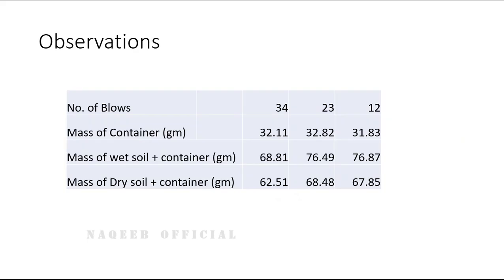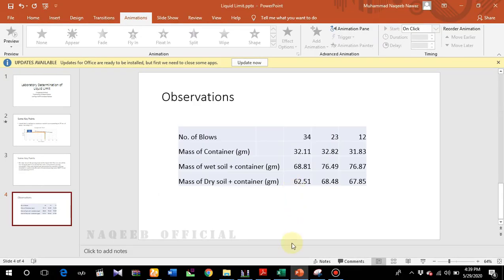Now let's understand how we determine the liquid limit from the laboratory test. These are the observations: we performed the test and found 34 blows in the first trial, 23 in the second trial, and 12 in the third trial. The mass of the container is 32.11 grams; we also have mass of wet soil plus container and mass of dry soil plus container. We put soil in the oven and obtain oven-dry soil after 24 hours.